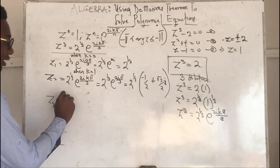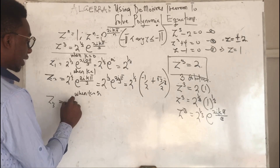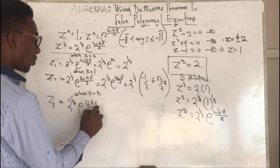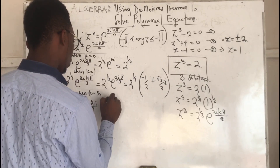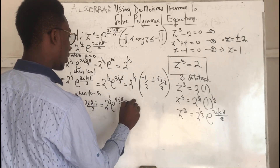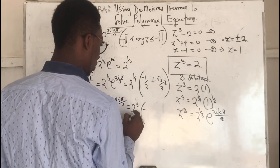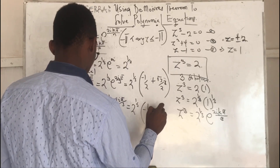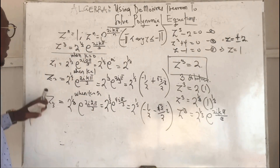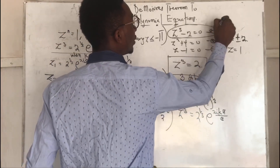The third solution z3 is when k = 2, giving z3 = 2^(1/3) · e^(4iπ/3), which equals 2^(1/3) · (−1/2 − (√3/2)i). These are our three solutions z1, z2, and z3 from the first equation.